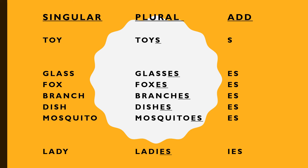We add or put 'es' to the singular noun. For example: glass, fox, branch, dish, mosquito — they become glasses, foxes, branches, dishes, mosquitoes. One glass, many glasses; one fox, many foxes; one branch, many branches; one dish, many dishes; one mosquito, many mosquitoes.